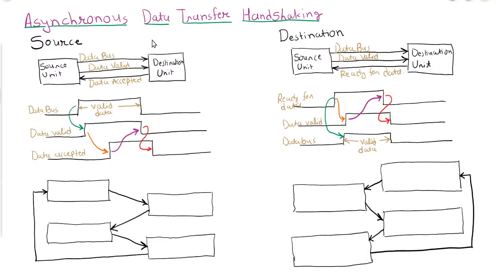In handshaking, instead of two wires, we will use three wires. Let's discuss source-initiated data transfer using asynchronous data transfer with handshaking. Between source and destination there are three wires: data bus, data valid, and data accepted. The source will initiate the transfer.